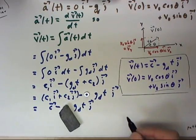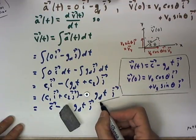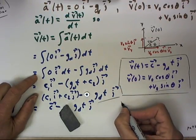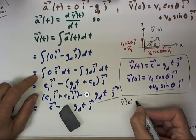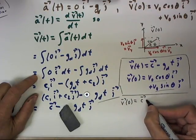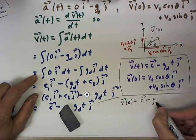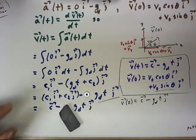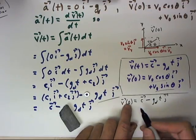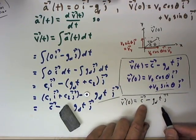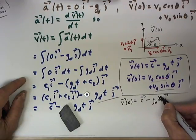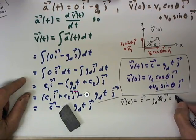Now if I plug 0 in here, I find that v of 0 is equal to c minus g sub d t j, so that v of 0 is equal to this times not t but times 0 and that's just equal to c.